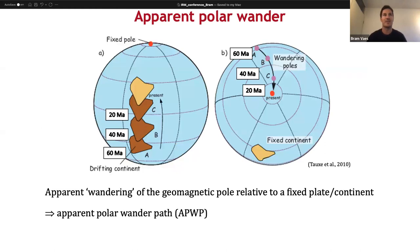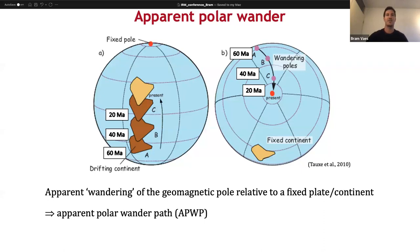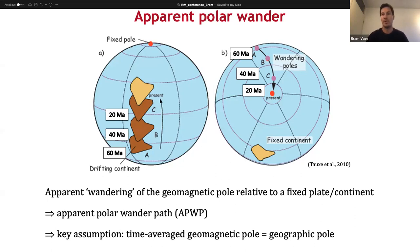One of the central concepts I would like to explain is apparent polar wander. If you imagine a continent drifting northward relative to a fixed geomagnetic pole — you see here the positions at 60, 40, and 20 million years ago — and if you were to collect paleomagnetic data from this continent, then from the perspective of having that continent fixed, the paleomagnetic poles that you would get from those samples would seem to be wandering away from the current location of the geomagnetic pole. This sequence of paleomagnetic pole positions is what we then call an apparent polar wander path, which allows us to reconstruct the position of this drifting continent back in time. A key assumption is that the time-averaged geomagnetic pole roughly coincides with the geographic pole.